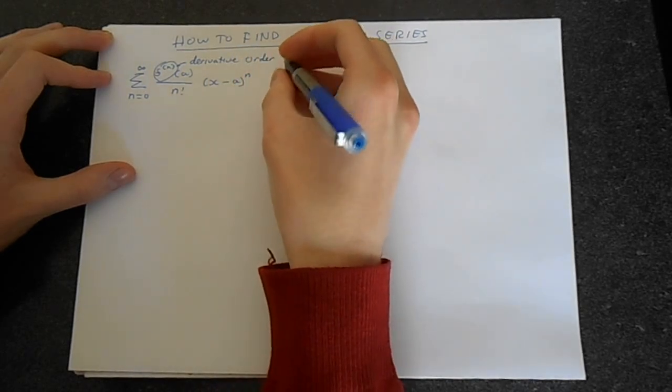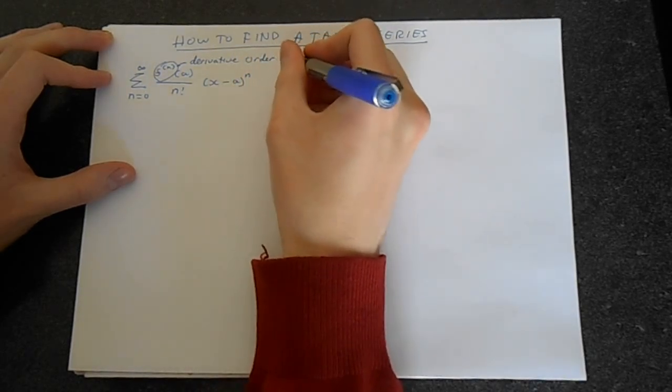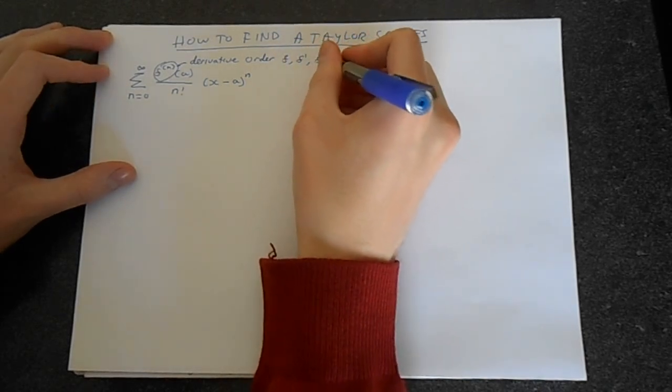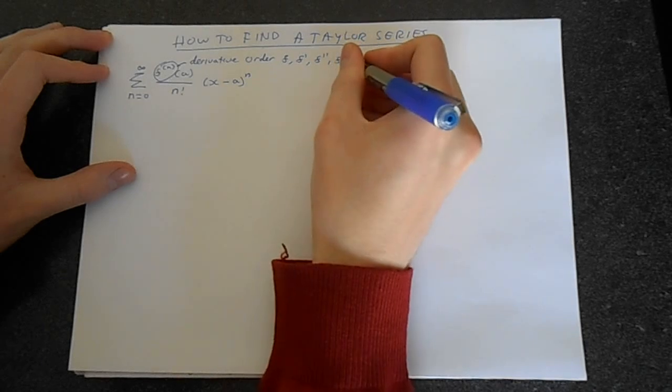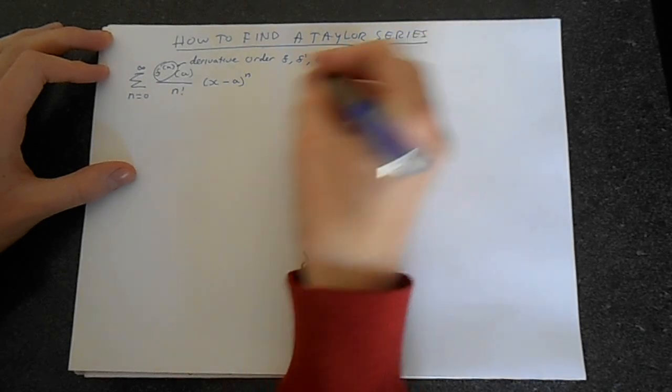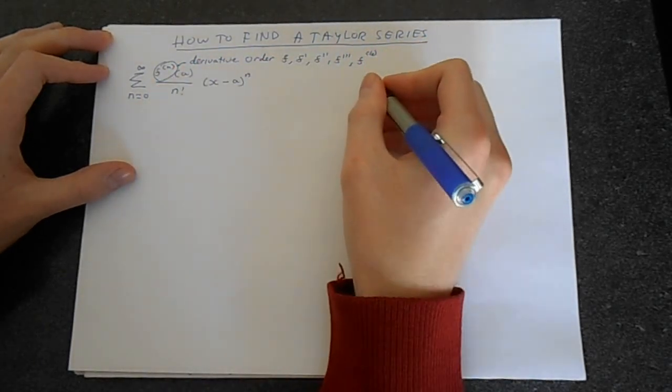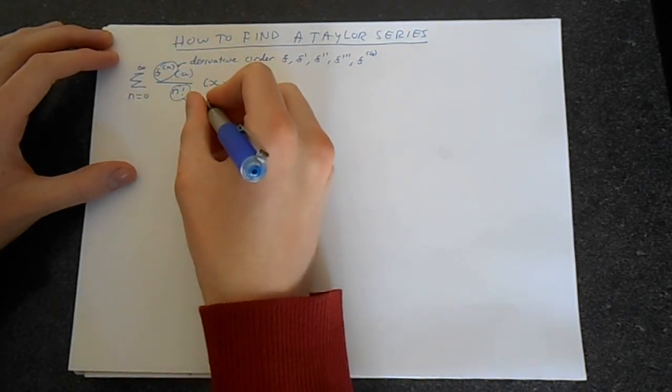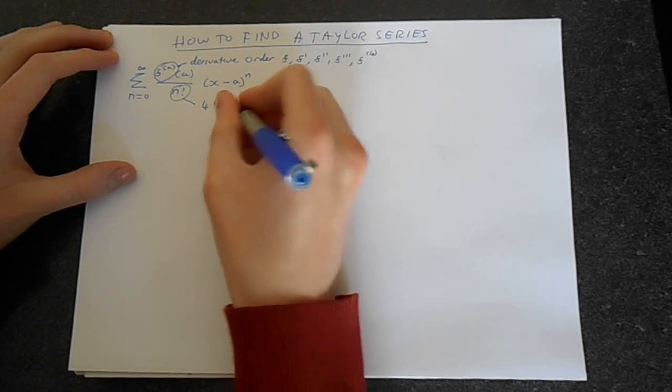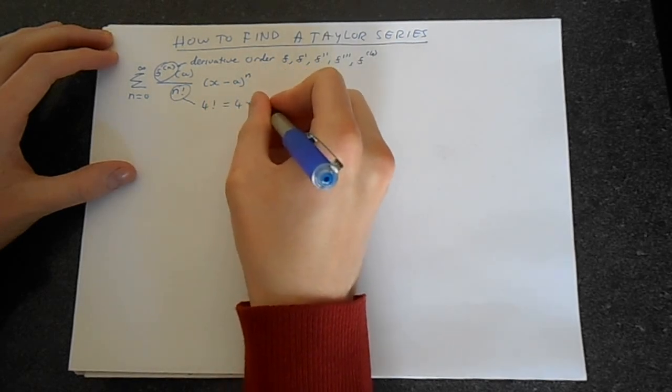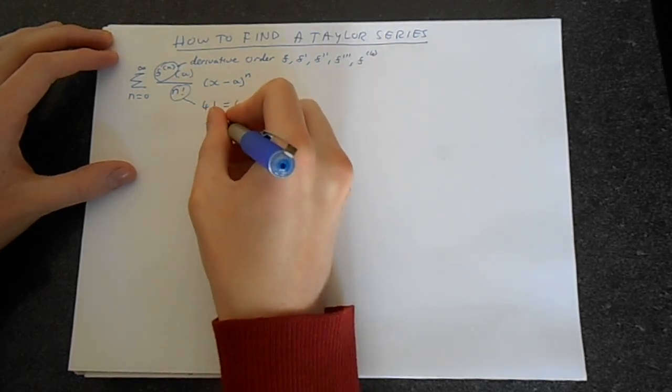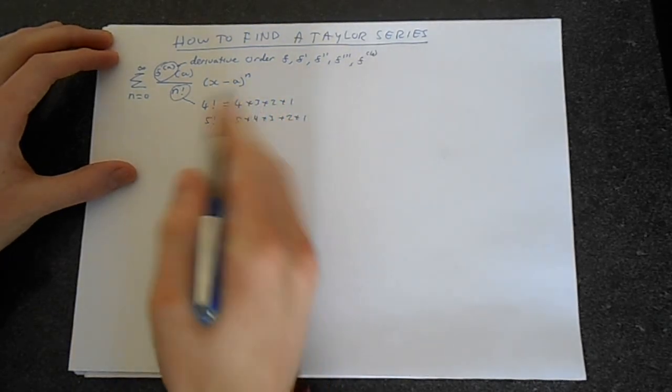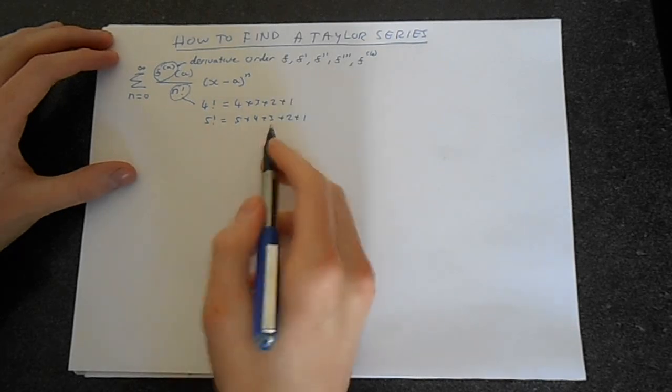We start off with just the value of the function. When n is 0, then we would get the derivative, then the double derivative, then the triple derivative, and when n is 4, it would be 4 like that. This is a factorial, so for example, 4 factorial is 4 times 3 times 2 times 1, 5 factorial is 5 times 4 times 3 times 2 times 1. This is the way that factorials work.